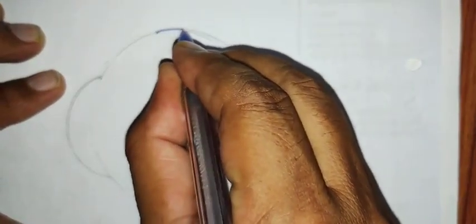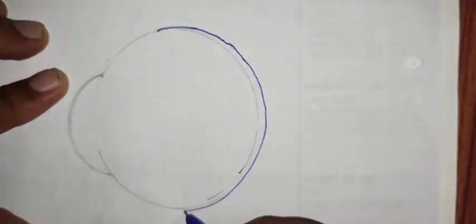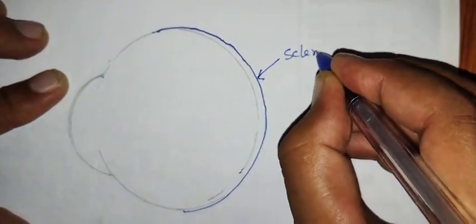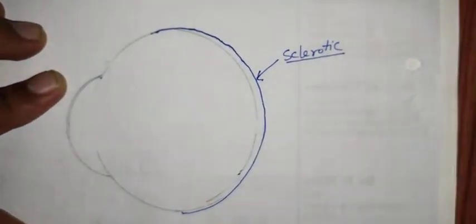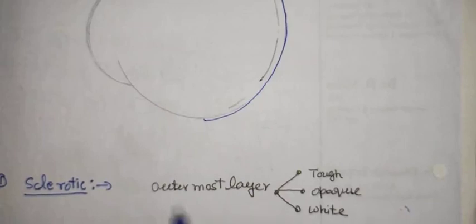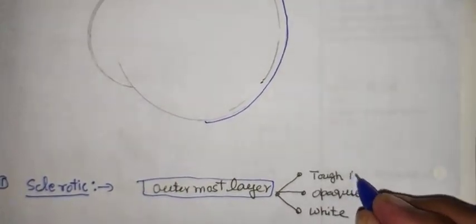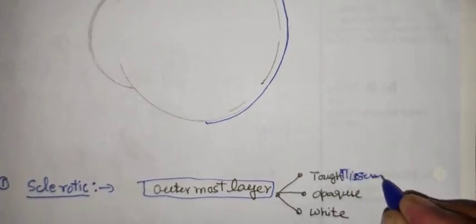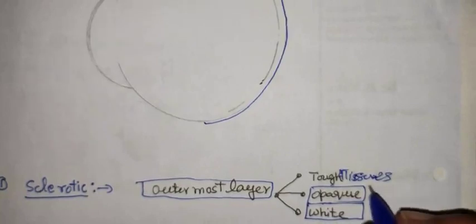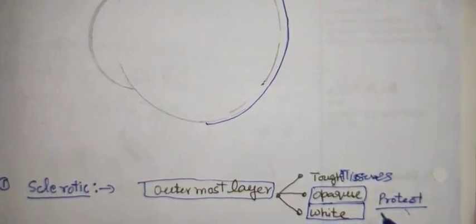From the back side, consider the outermost covering from the back. This outermost covering from the back is called the sclerotic. It is the outermost covering layer. It is made up of white tissues, opaque and white in color. It functions to protect the inner parts of the human eye.